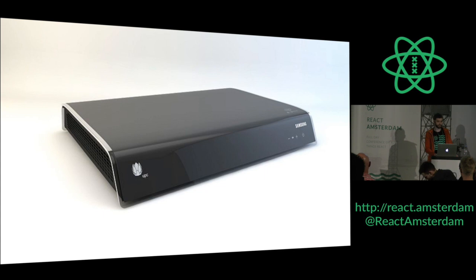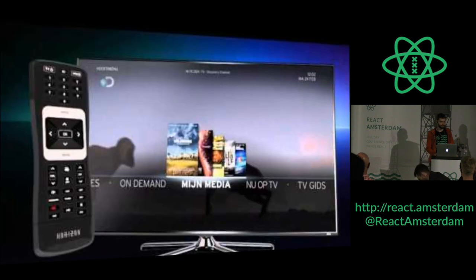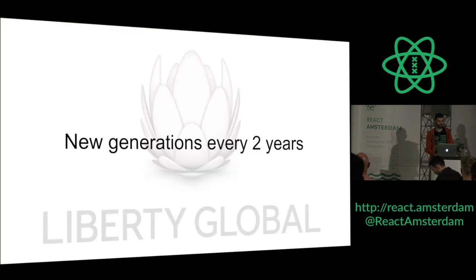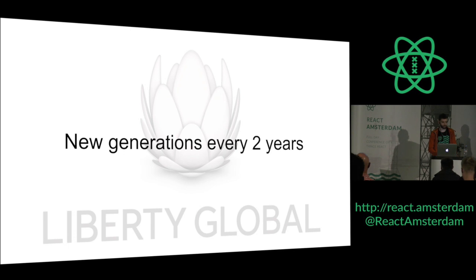So why do we need this flexibility? Because we develop set-top boxes and every two years they change. A set-top box is basically a small PC with a JavaScript-based operating system, so the whole UI is developed with JavaScript — all the screens, app store, apps are also JavaScript. It's a big piece of front-end code and it's developed with React, and now we're migrating completely to React and Redux.